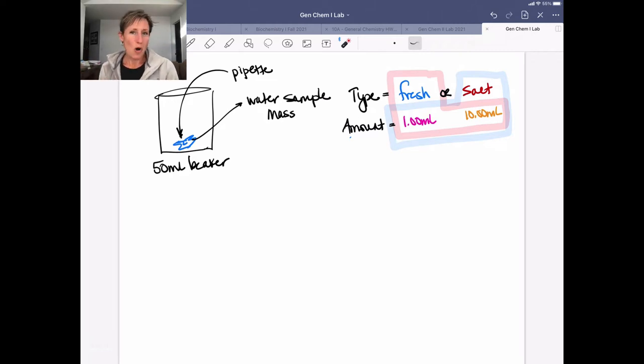So there's two kinds of water we're going to be using. The first is fresh water, and the second is salt water. So in addition to two different types of water, we're actually going to be measuring two different amounts of water. Either a small volume, one milliliter, using a one milliliter volumetric pipette, or 10 milliliters using a 10 milliliter volumetric pipette. And Dr. Brown has a great video out there to show you how to use these different pieces of equipment.